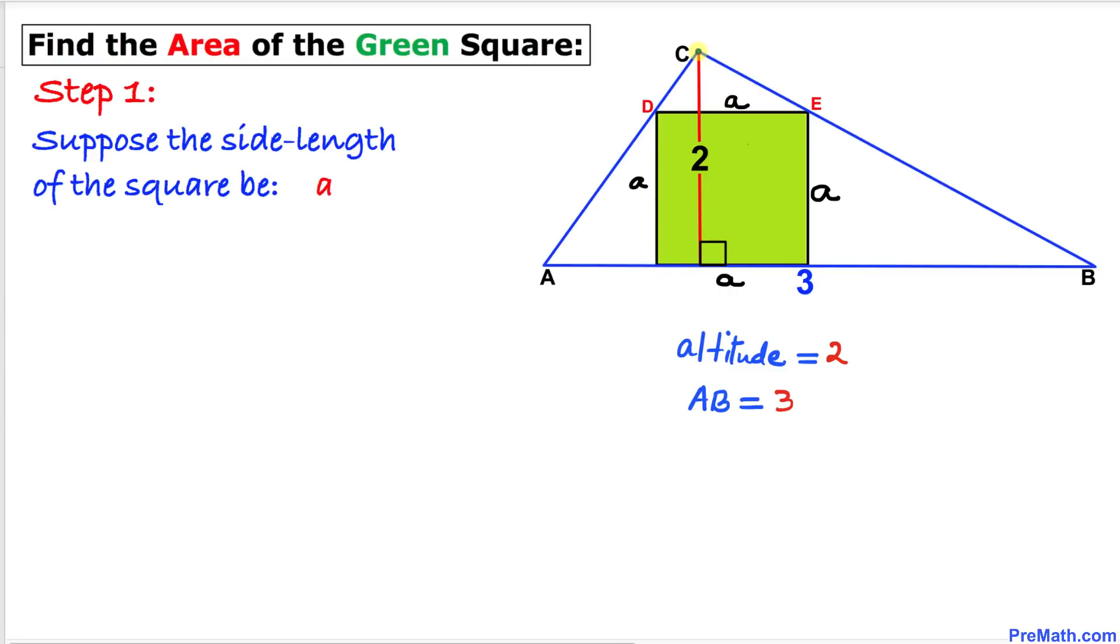Now let's focus on this altitude. This one which is 2 units, and this height is A units. Then we know that this height is going to be 2 minus A.